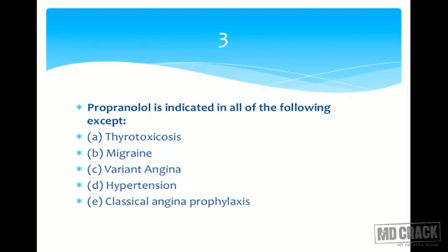Question number three: propranolol is indicated in all of the following EXCEPT — A thyrotoxicosis, B migraine, C variant angina, D hypertension, and E classical angina pectoris. Propranolol is a beta blocker used in thyrotoxicosis to decrease symptoms like anxiety, tachycardia, and palpitation. Beta blockers are also indicated in migraine.